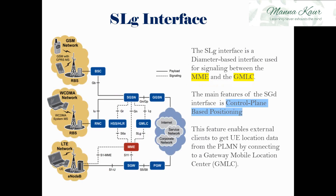The SLG interface is between the MME and the GMLC, the Gateway Mobile Location Center, and is also used for signaling. The main feature of the SLG interface is control plane-based positioning, which enables a client to get the UE location data from the PLMN. In an LTE network, the geographical area and the ECGI value are needed to track the UE location.